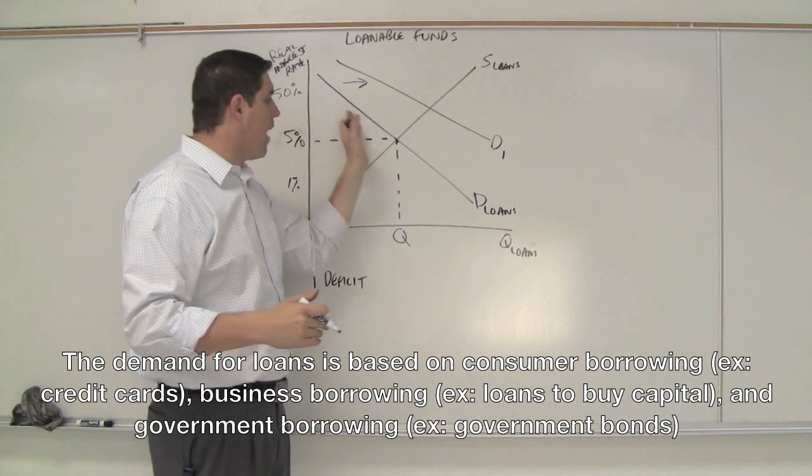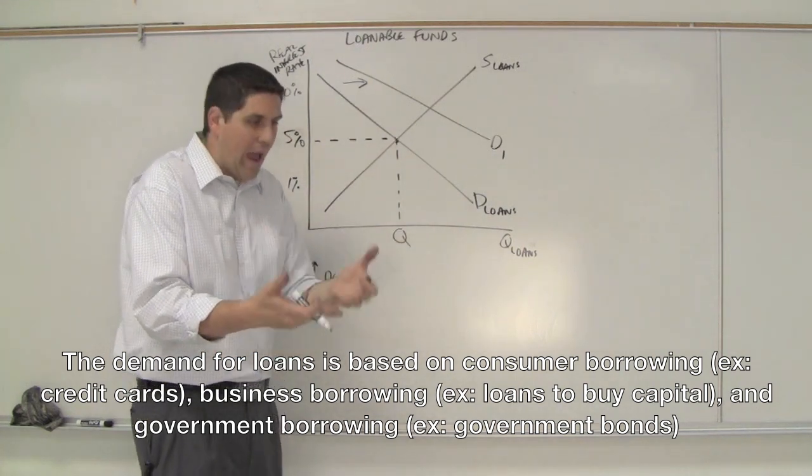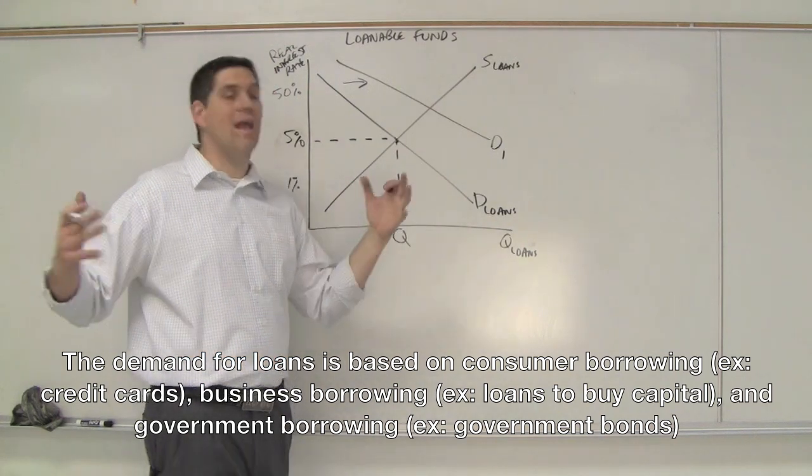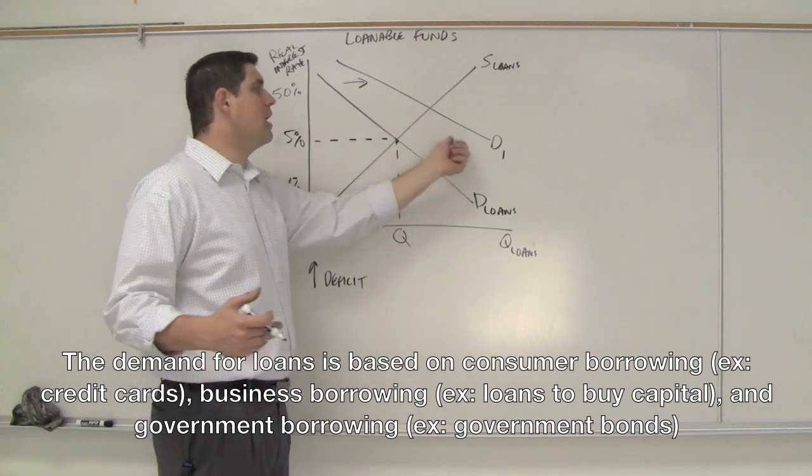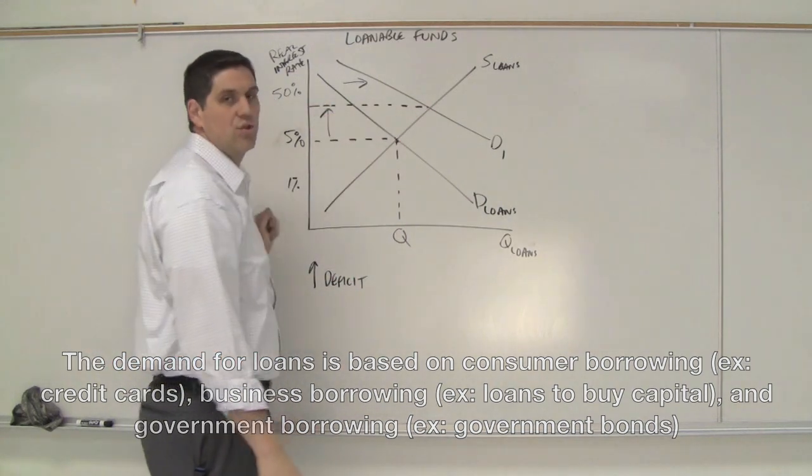Why? Well, the private sector, there's a certain amount of demand to borrow. When the government shows up, there's another big group coming in and saying, hey, I want to borrow too. I demand a loan. That would increase the demand. And you can see on the graph, that would increase the real interest rate.